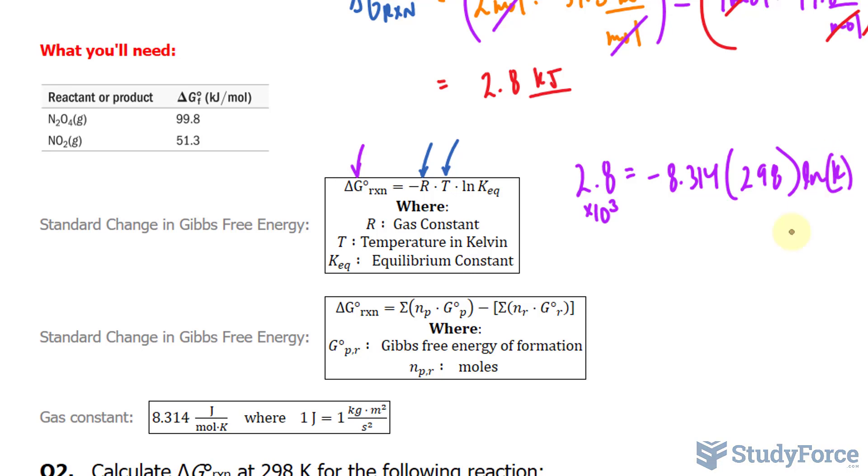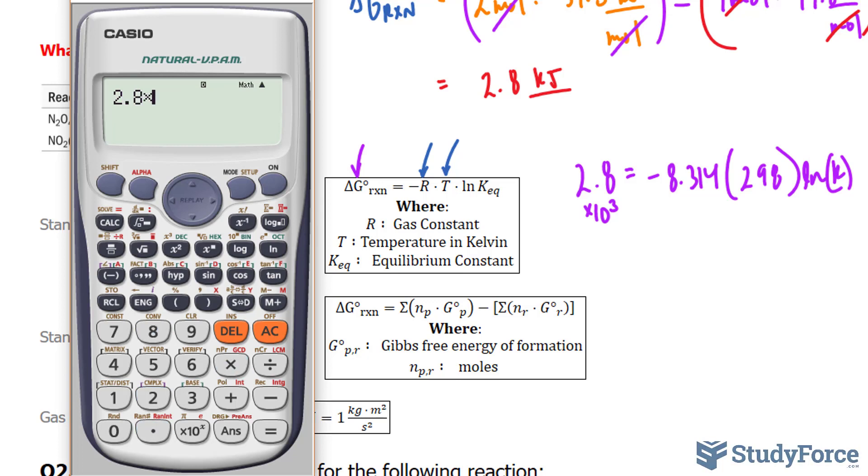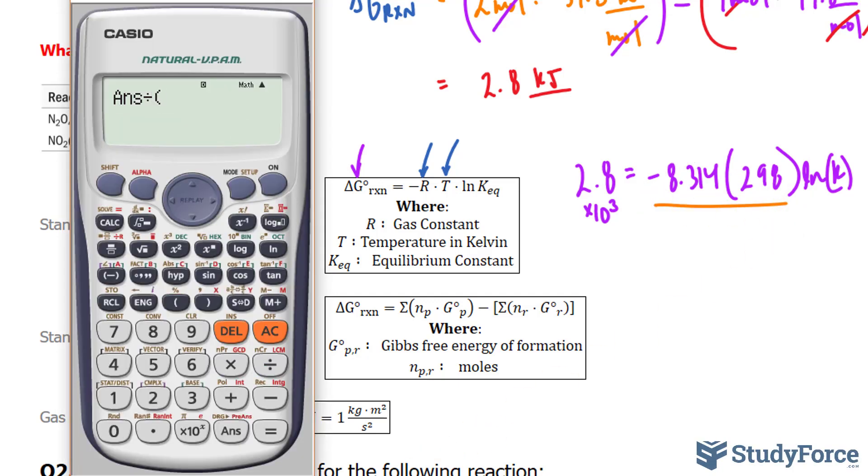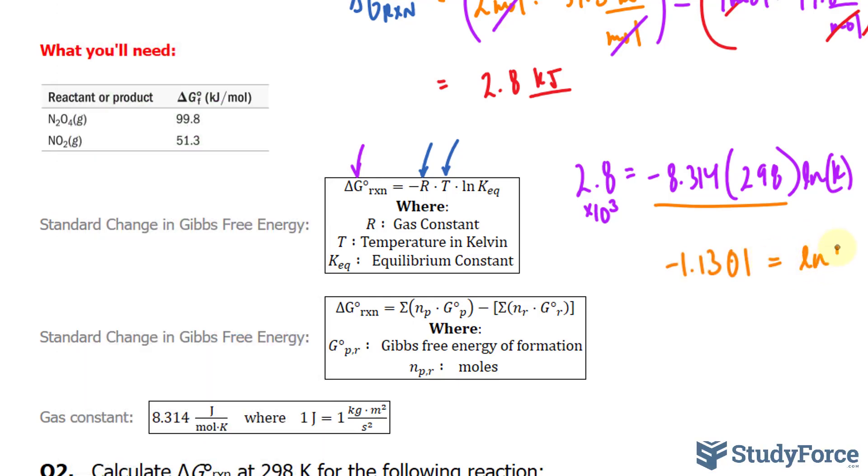We need to use some algebra now to solve for k. It's not hard to do. I'll start with 2.8 times 10 to the power of 3, and I'll divide this by the product of these two. So divide that number by negative 8.314 times 298. This gives us a value of negative 1.13 equals ln of k.